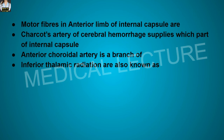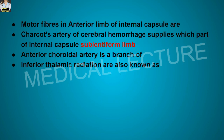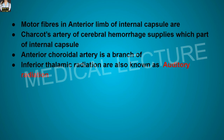Motor fibers in the anterior limb of the internal capsule — Charcot's artery of cerebral hemorrhage supplies the sublentiform limb of the internal capsule. The anterior choroidal artery is a branch of the internal carotid artery. The inferior thalamic radiation is also known as the auditory radiation.